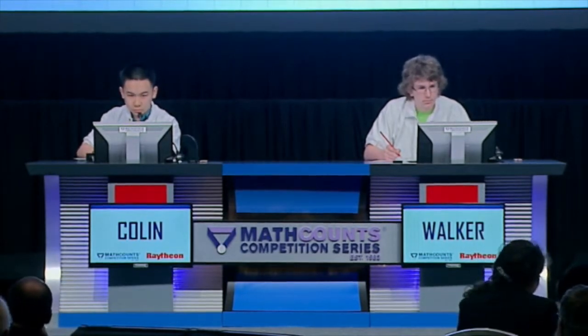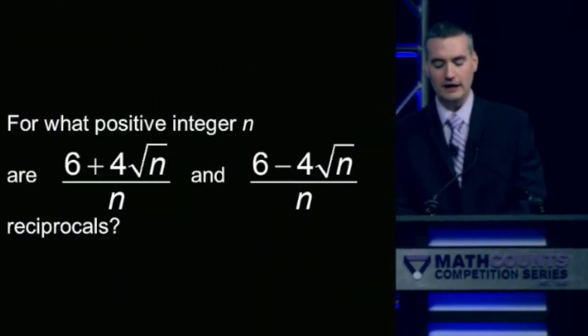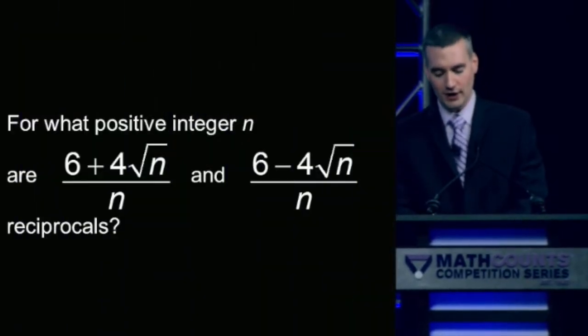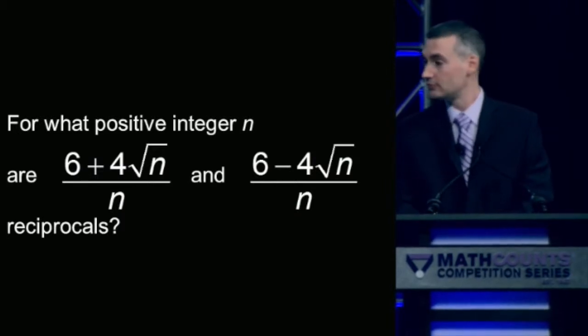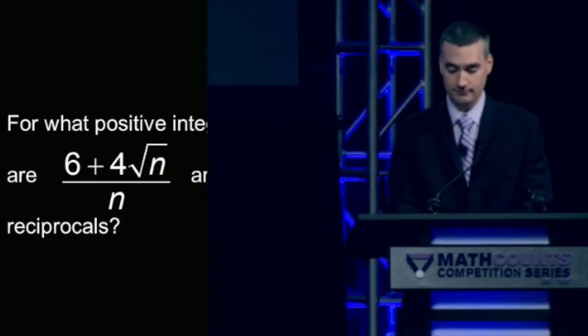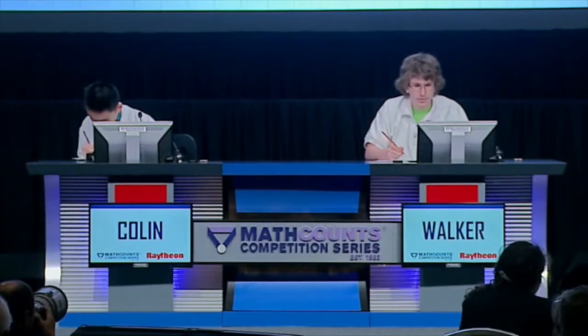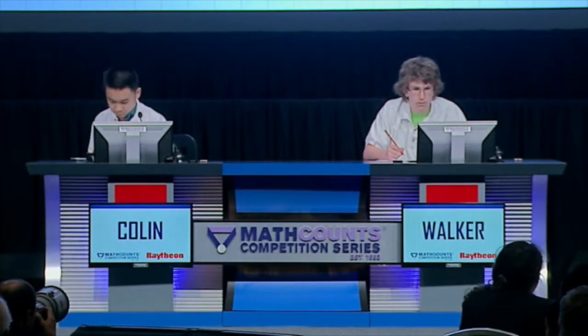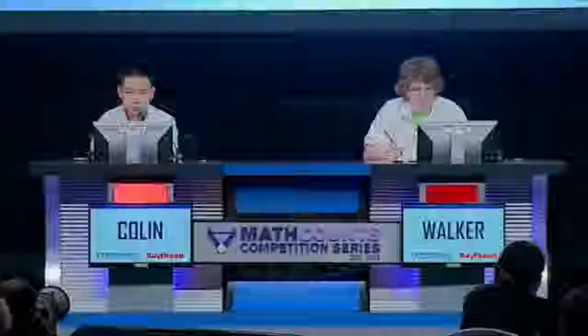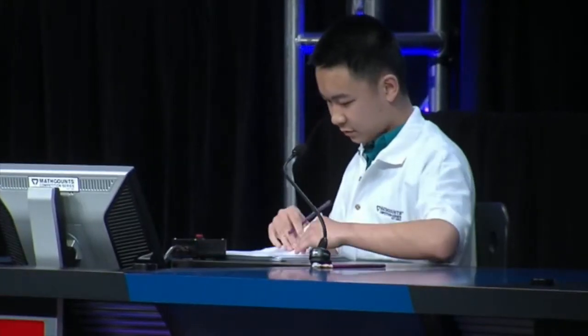Our first question is: for what positive integer n are the quantity 6 plus 4 root n all over n, and 6 minus 4 root n all over n reciprocals? Walker buzzed in but that is not the correct answer. Colin answers 2, and 2 is the correct answer.